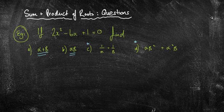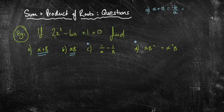The two that they'll always ask you is alpha plus beta and alpha beta. Let's look at the first one: alpha plus beta. If you remember, that uses the formula negative b over a, which in this case is 6 over 2, which equals 3. So alpha plus beta is equal to 3.